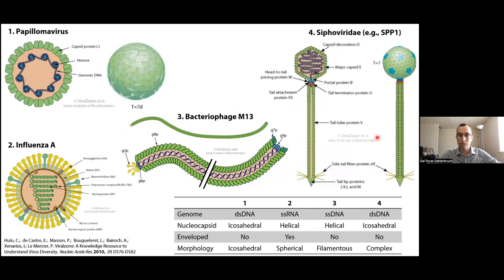An important feature of viruses is their variety. Viruses can be categorized through many structural features. For example, some have an icosahedral capsid like the papilloma virus; influenza A has a helical nucleocapsid and is an enveloped virus. Many bacteriophages do not have an envelope, and some have a capsid attached to a tail. Some bacteriophages are just filamentous, like bacteriophage M13. So viruses have a really large variety of structural features and morphologies.